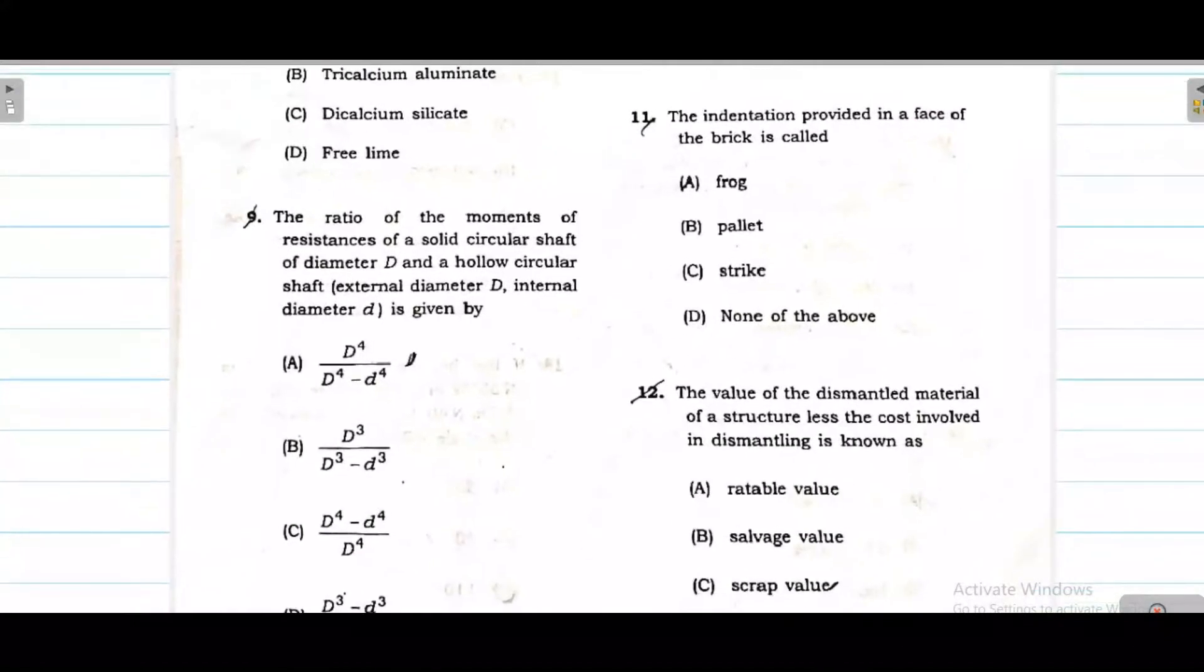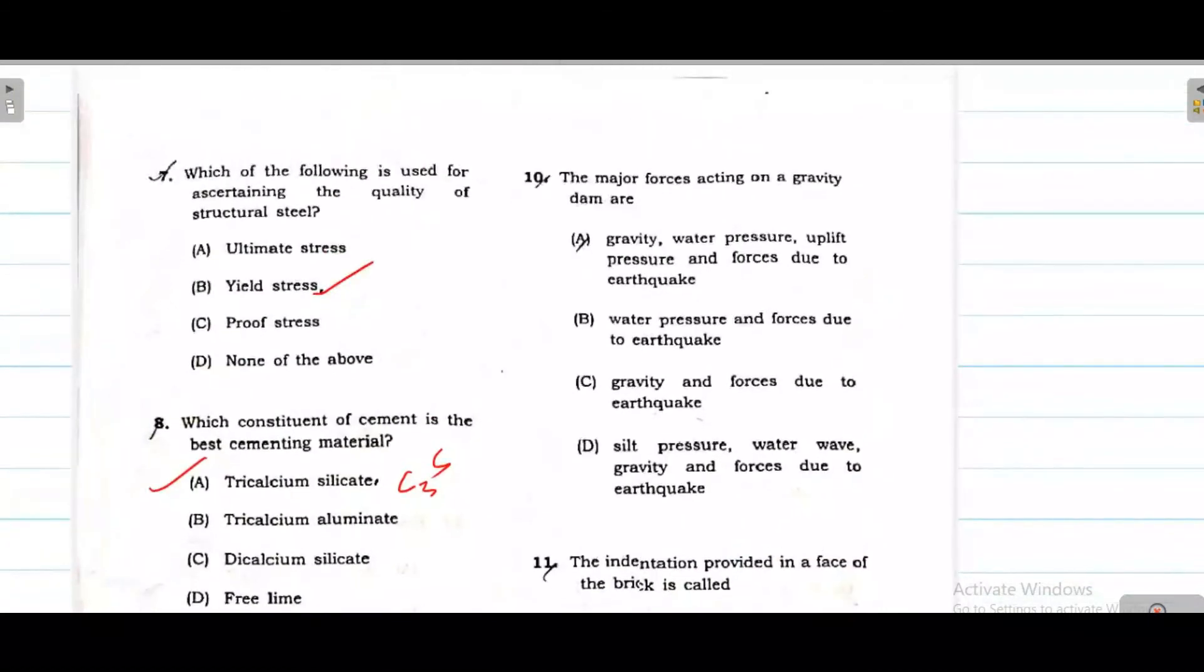Next is strength of material. Moment of resistance of solid circular shaft of diameter D and hollow circular shaft of external diameter D and internal diameter small d. The moment of inertia is pi by 64 D^4 for solid circular shaft. For hollow circular shaft it's pi by 64 (D^4 - d^4), external minus internal. This will be cancelled out, ultimately option A is correct.